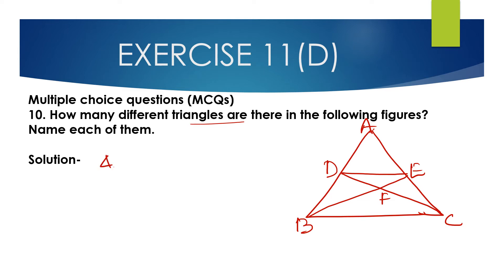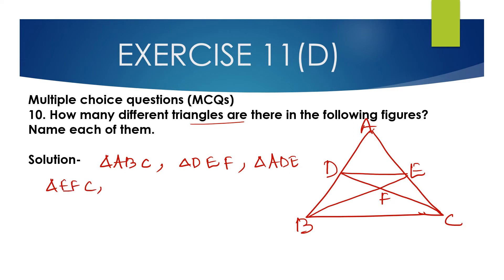We identify the triangles: Triangle ABC, Triangle DEF, Triangle ABC again, Triangle ADE, Triangle EFC, Triangle ADE, Triangle DEF, Triangle DVE, Triangle DVC, Triangle DBA, Triangle FBC, Triangle DEC, Triangle EFC, Triangle ABE, Triangle ADC.